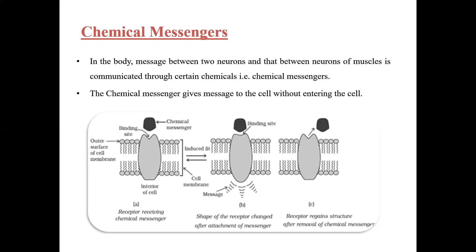Here we can see the receptor receiving chemical messengers. The receptor has a binding site. When the chemical messenger comes, the shape of the receptor changes and then attaches to the chemical messenger — the same as with enzymes. The chemical messenger comes to the binding site and the receptor changes shape to bind it.